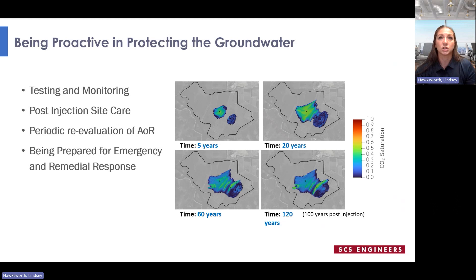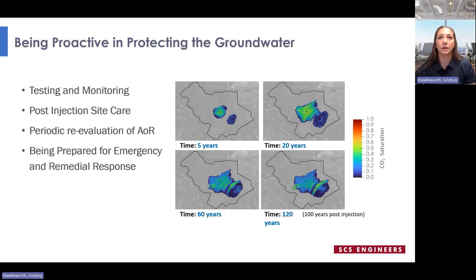Site characterization is not the only way to be proactive in protecting groundwater with your Class 6 well. You can continue to be proactive throughout the entire operational phase and post-injection phase through testing and monitoring, post-injection site care, periodic re-evaluations of the area of review, and being prepared for any emergency and remedial response.